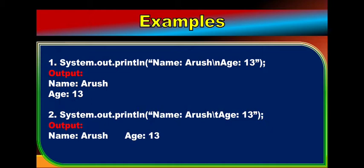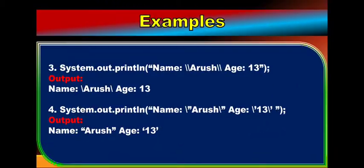In example three, using double backslash — double backslash means one backslash symbol will be printed. So before 'Arus' one backslash symbol appears, and after 'Arus' another backslash symbol is printed. In example four, using backslash double quote around 'Arus' — backslash double quote prints one double quote. And backslash single quote around '13' prints a single quote. So the output shows: double quote Arus double quote, and single quote 13 single quote.